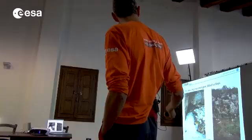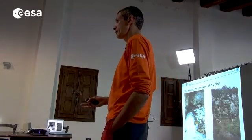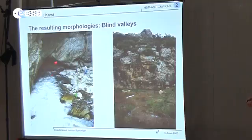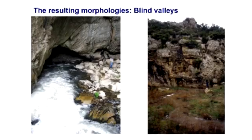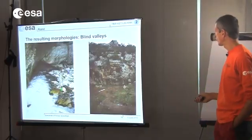Another typical feature is blind valleys. A river coming from impervious material — from shales, granites, whatever — meets the limestone and goes underground. It disappears underground. That's why they're called blind valleys: the valley doesn't have an outlet, it doesn't continue — it's blind. That's typical of karst areas.